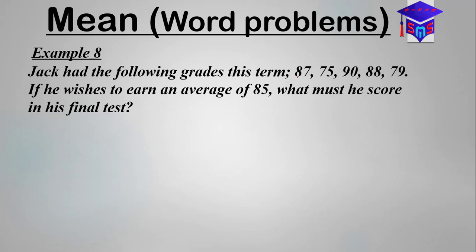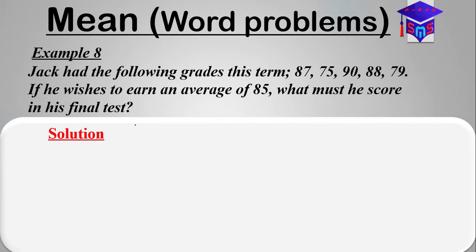What it means is that Jack had already taken five tests, and there is going to be a sixth test. He wants to score an average of 85 after the sixth test, so what must he score in the sixth test? Let's quickly look at the solution.